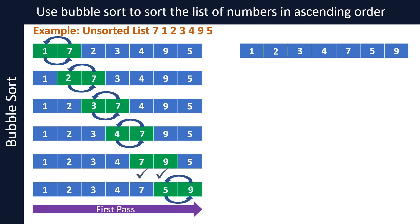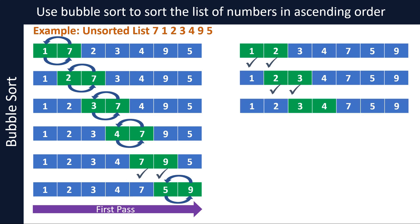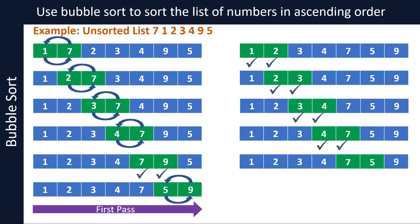Now take the list as it stood at the end of the first pass and repeat the steps. Take the first two items, 1 and 2 — since 1 is smaller than 2 they are in the correct order, no swap needed. The list stays as 1, 2, 3, 4, 7, 5, and 9. Continue comparing pairs: 2 and 3 — correct order, no swap. The next pairs are also in the correct order, no swap needed. Take the next two items, 7 and 5 — since 7 is larger than 5 they are in the wrong order, so swap them.